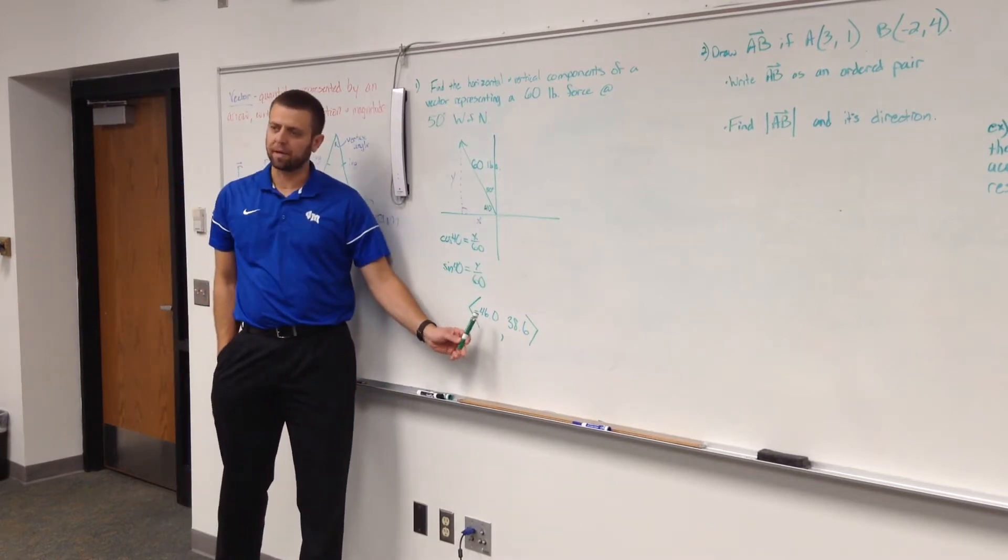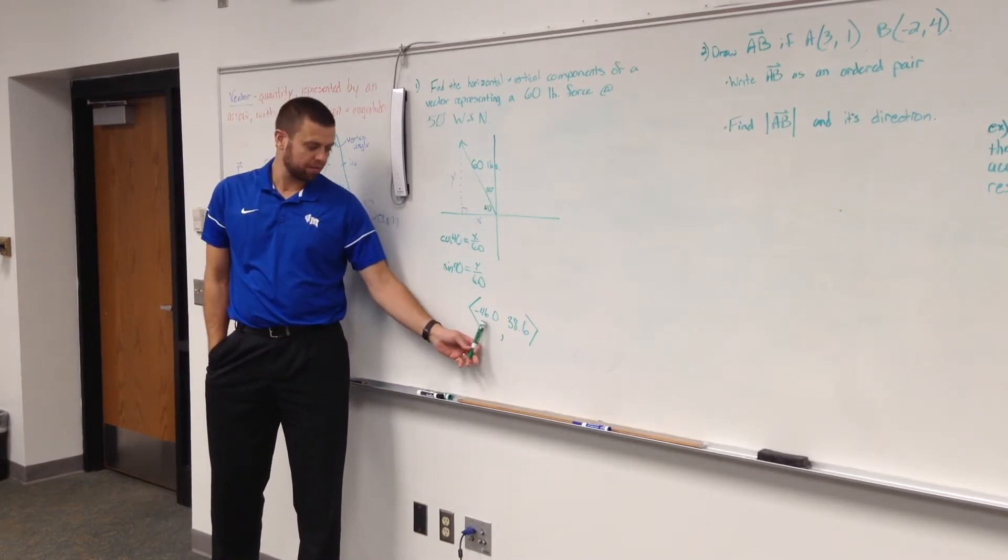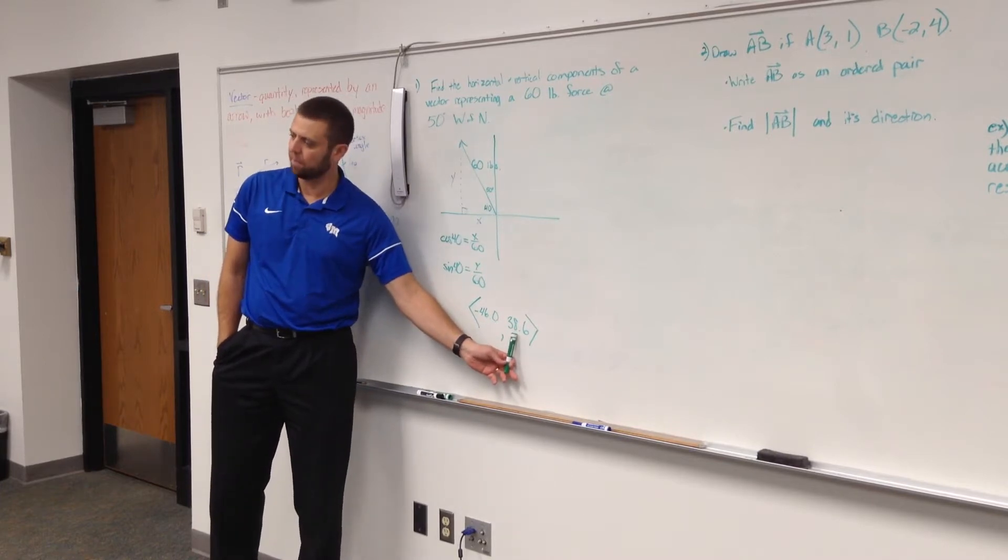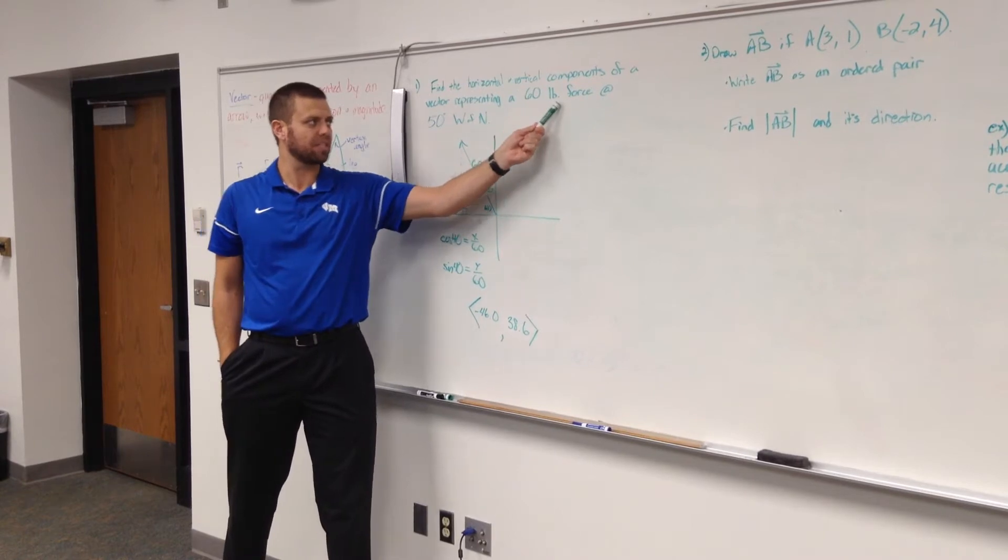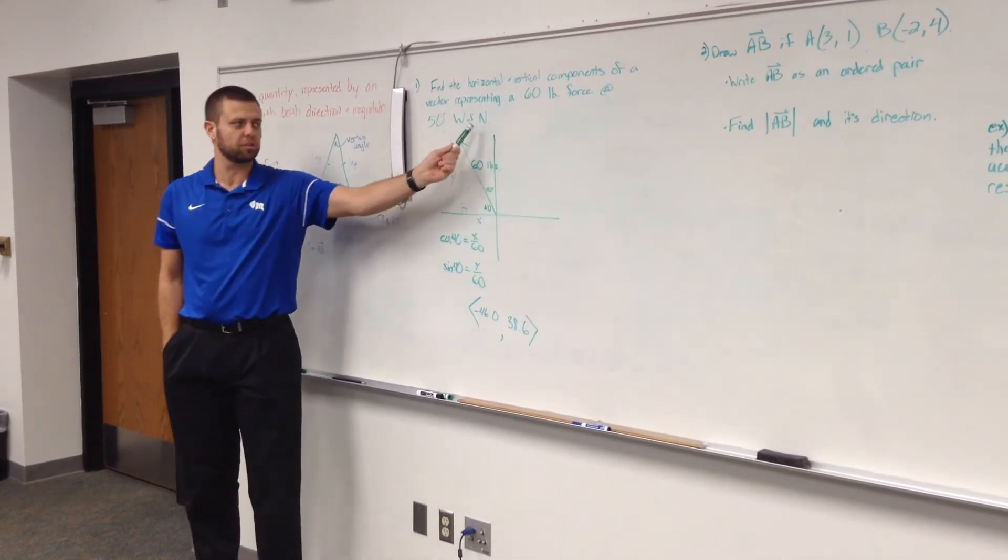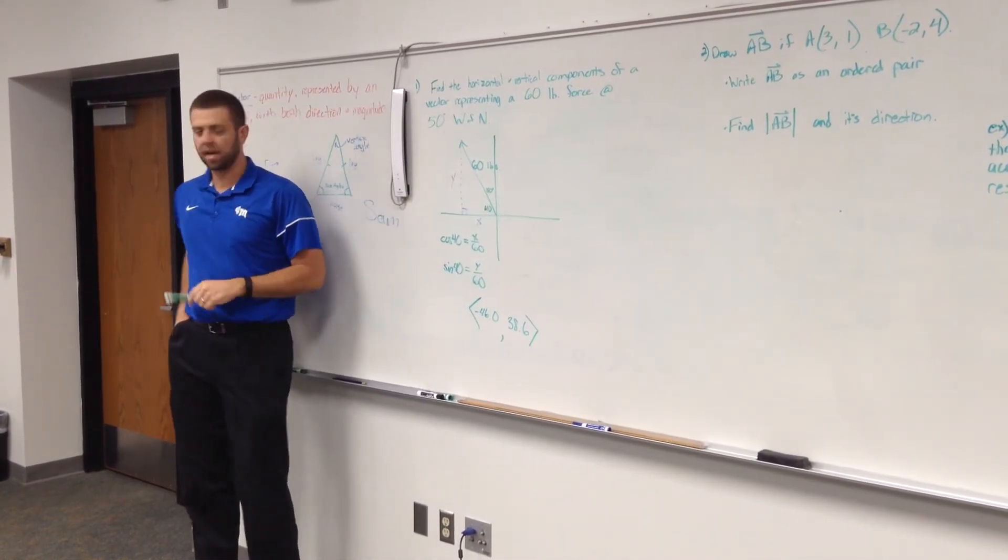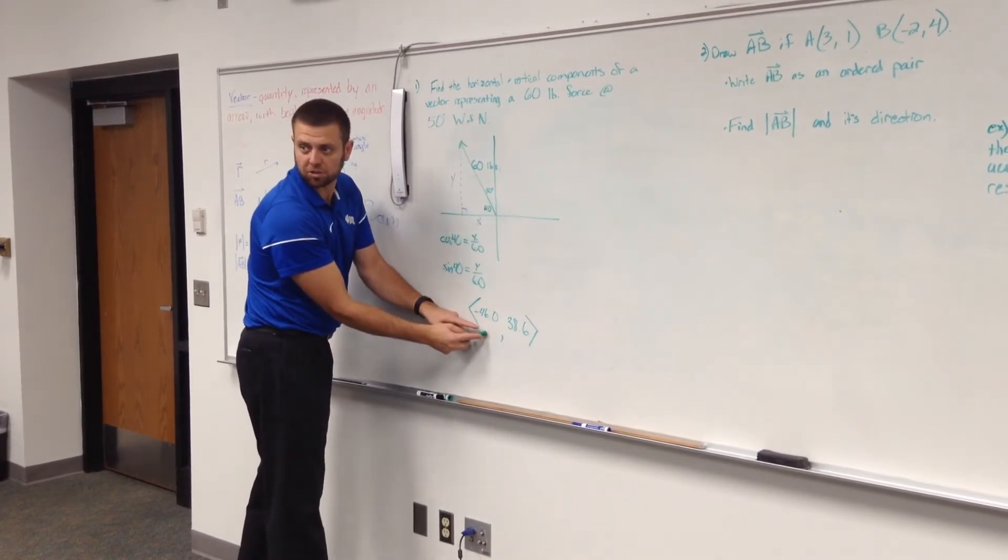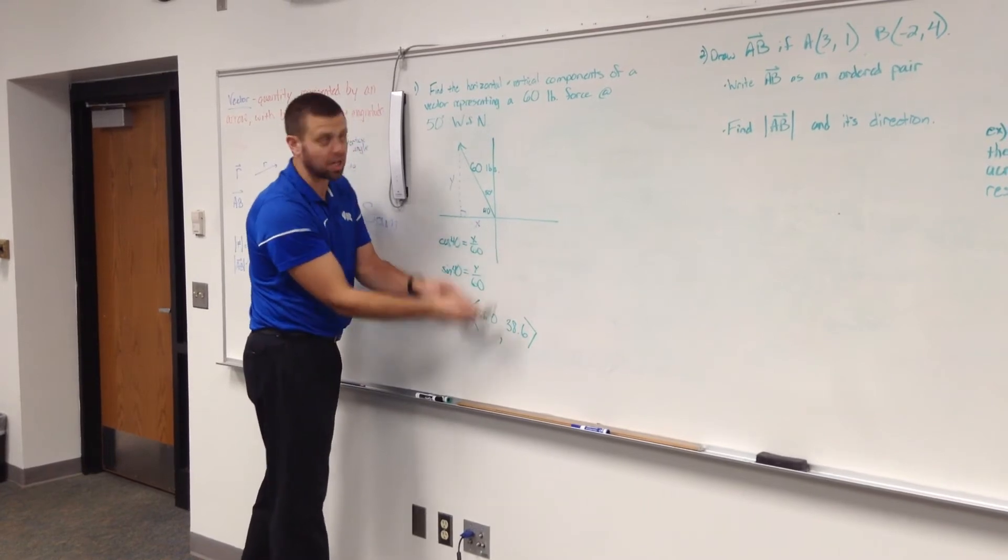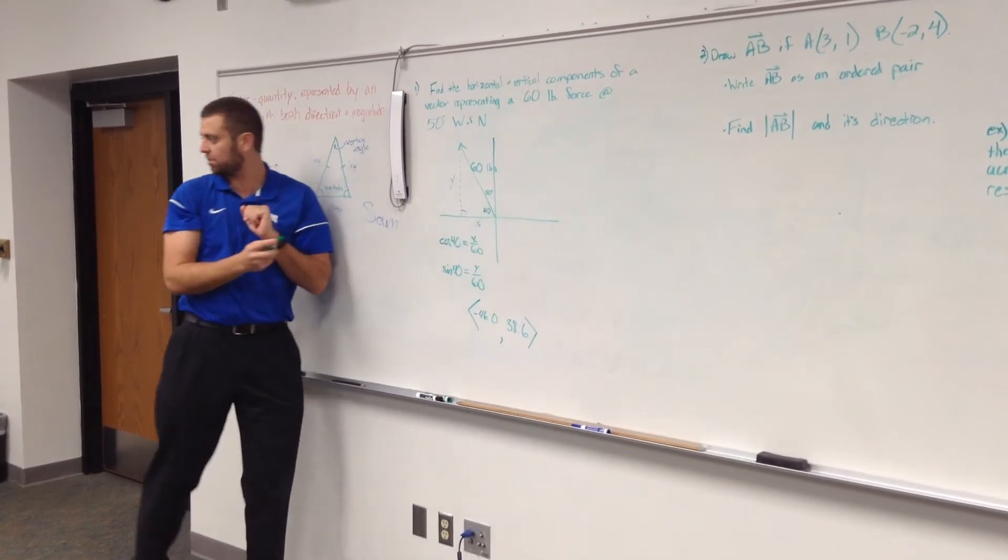So what you have found, take close attention, you have found the horizontal and vertical components of a vector that represents a 60 pound force 50 degrees west of north. This is a magnitude and direction, these are the horizontal and vertical components of that vector, its magnitude and direction.